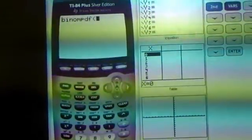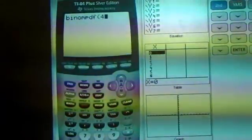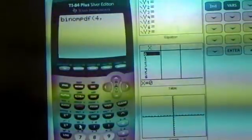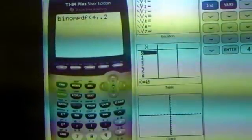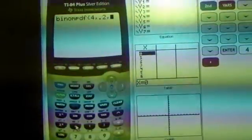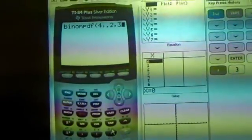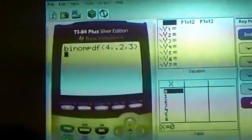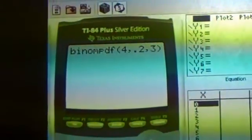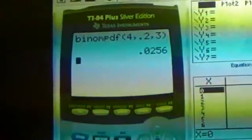And then you go 0.2 for your probability, and then you put your number of successes in, which is 3. And then you hit the parenthesis, and then you push enter. And that gives you your answer.